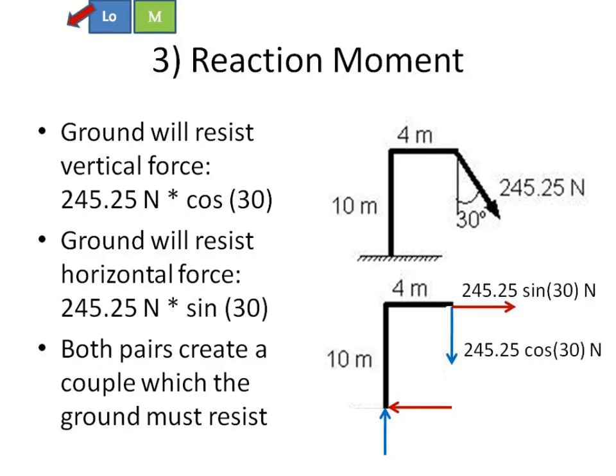And the third way is to have a reaction moment. Remember that the ground down here is going to resist the reaction moment from that couple and this couple. Both of those red and blue pairs of arrows are couples that would tend to tip this over clockwise. So the ground is going to have to give you a counterclockwise reaction moment that we put down here and we call a reaction moment. Those are your three ways of getting moments.